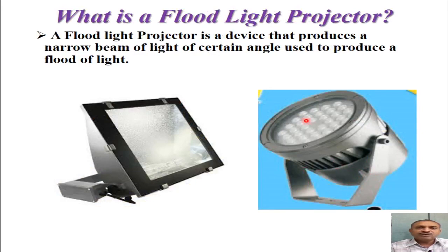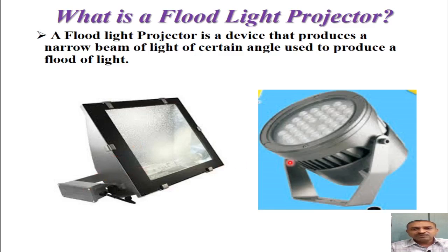A flood light projector is a device that produces a narrow beam of light of a certain angle, used to produce a flood of light. Two such projectors are shown here — one has a square front surface and another has a circular shape. Both projectors are provided with mounting devices so that their installation angle can be adjusted as per requirements, producing a beam of light that floods the required surfaces.